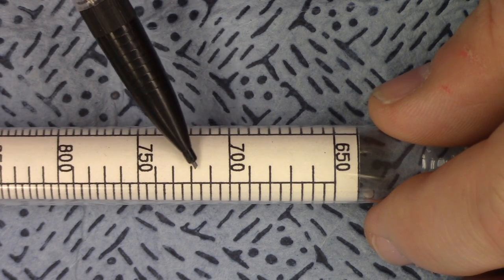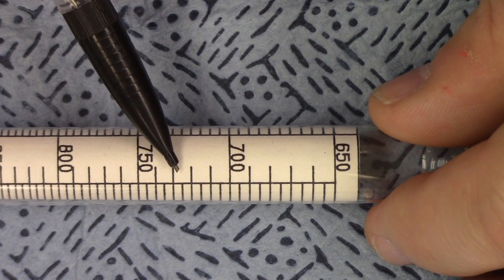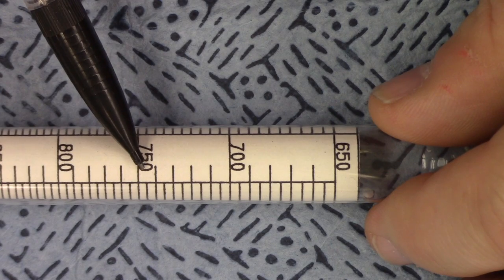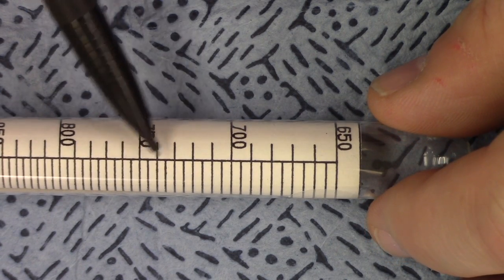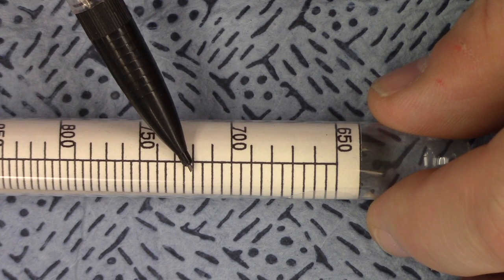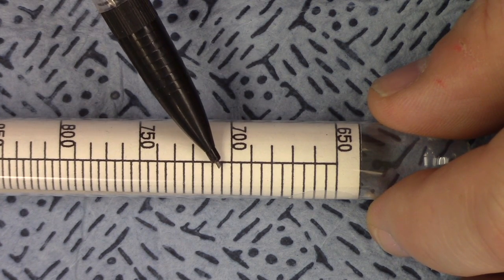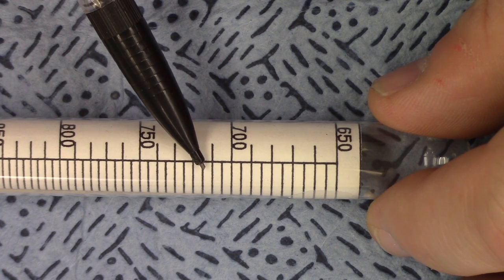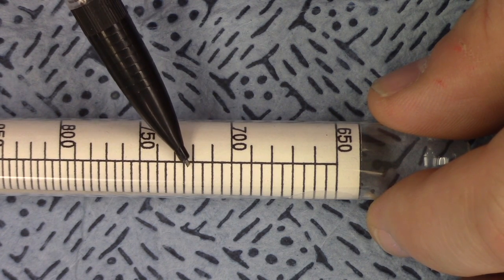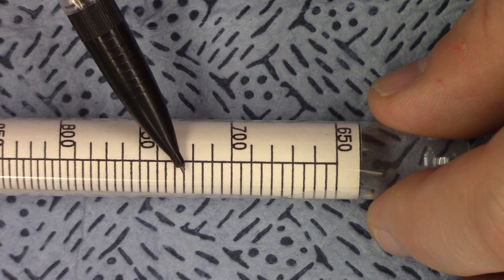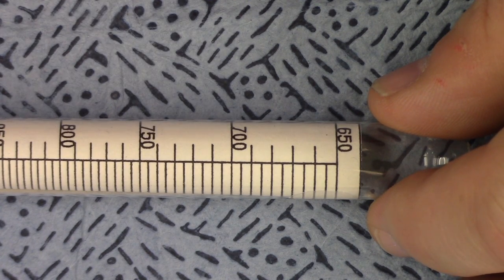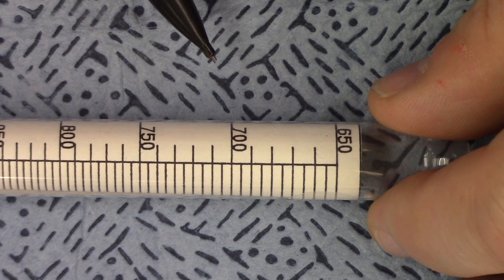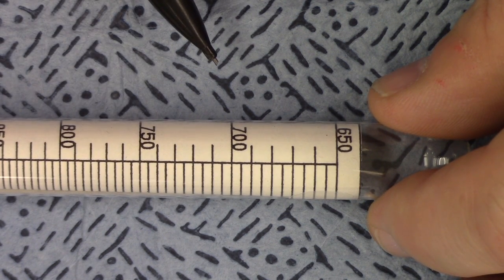If we turn it just a little bit, now we can see there's actually some more hash marks over here. This hash mark is 705, 710, 715, 720, 725, and so on. Now, you want to measure this to where the meniscus touches on one of these hash marks. And try not to forget your estimated digit.